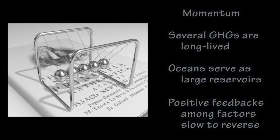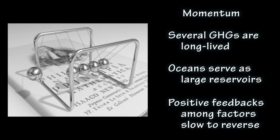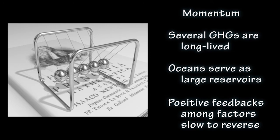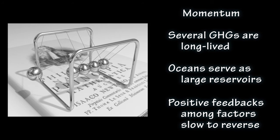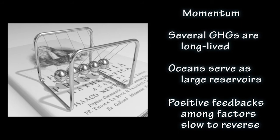Earth will continue to warm for many decades after we curtail greenhouse gas emissions. Several factors are responsible for this momentum. First, several of the greenhouse gases are long-lived — greater than 100 years — and so concentrations of them will remain high in the atmosphere, even without further additions.